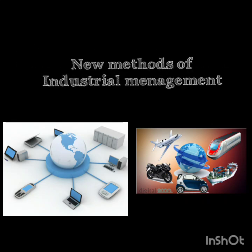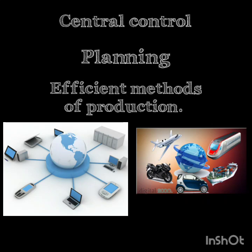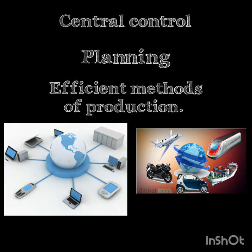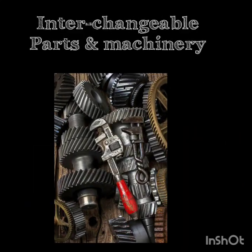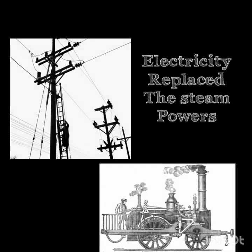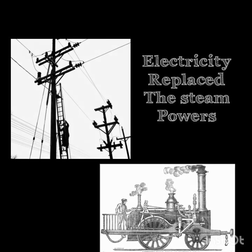New methods of industrial management were devised, with emphasis on central control, planning and efficient methods of industrial production on the eve of the First World War. Many industries began to use interchangeable parts and machinery. Electricity replaced steam power in factories. Consequently, industrial production marked great progress in the mass production methods. With this, let us conclude our lesson for today.